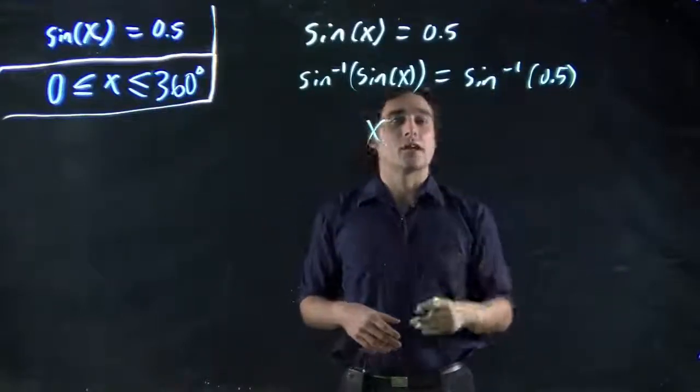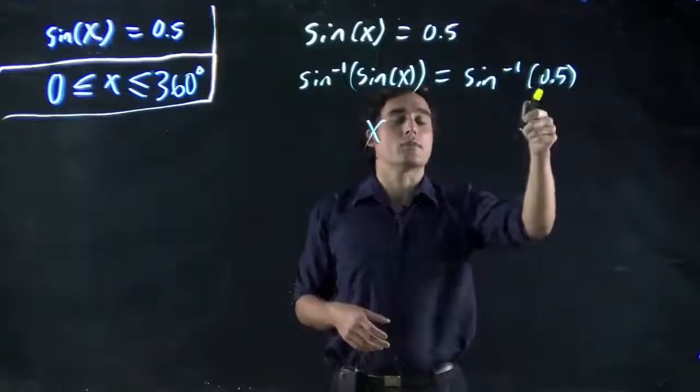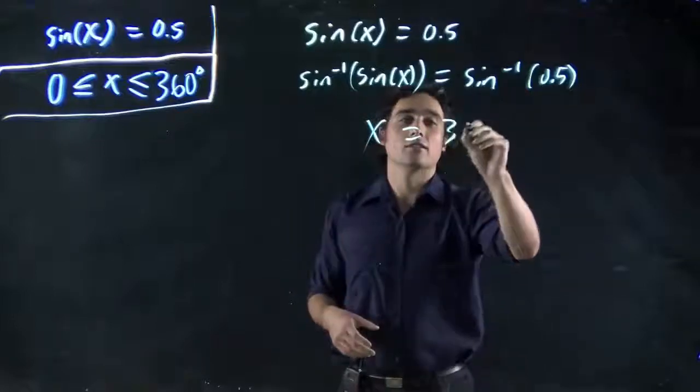Don't do sine to the minus 1. Go find the button. It's probably your sine button. You click shift or second function first. Sine to the minus 1 of 0.5. That should give you 30 degrees.